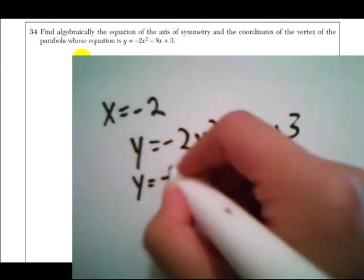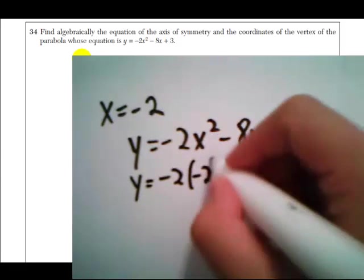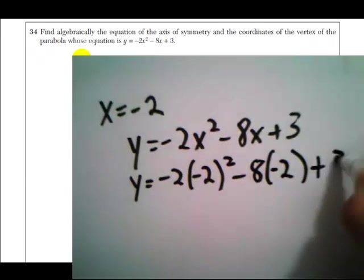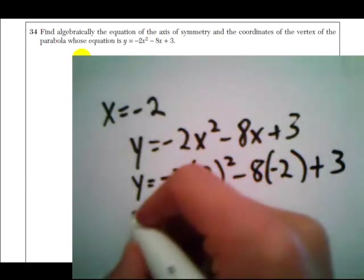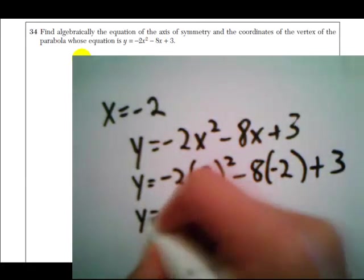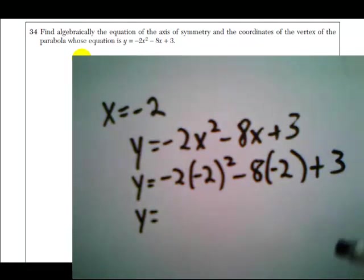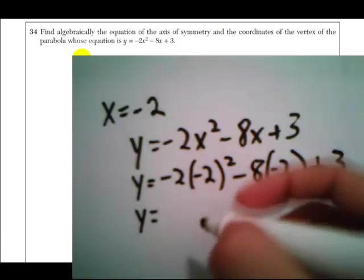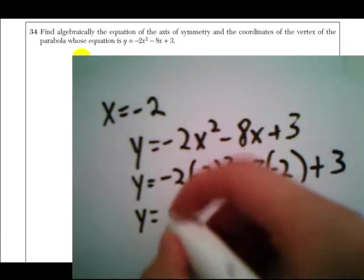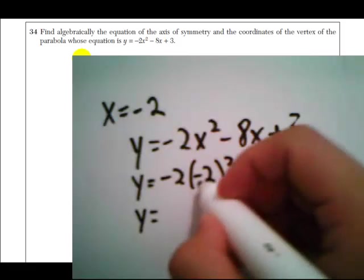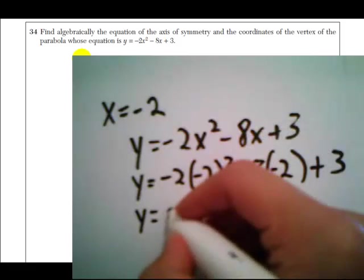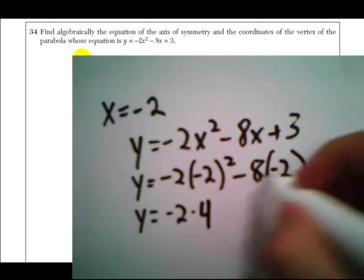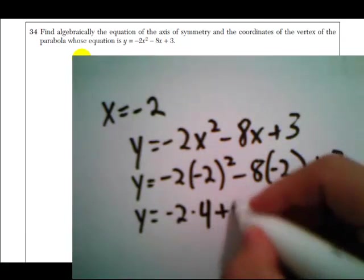So y equals negative 2 times negative 2 squared minus 8 times negative 2 plus 3. Really be careful with your signs here. Regents loves to test how well you can multiply and raise negatives to powers. So negative 2 times negative 2 squared, that's going to be a positive 4. Negative 8 times negative 2 is a positive 16.